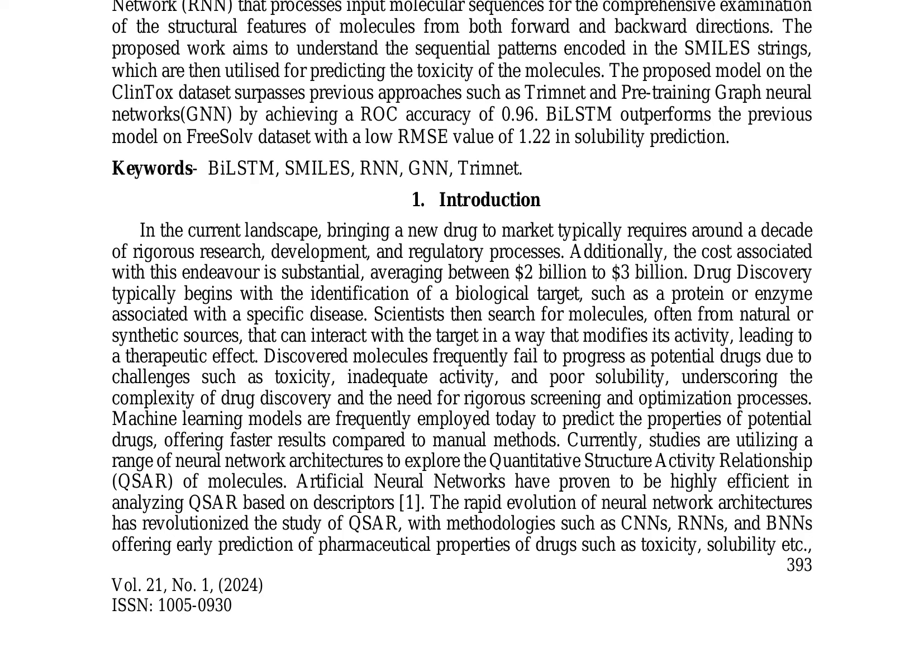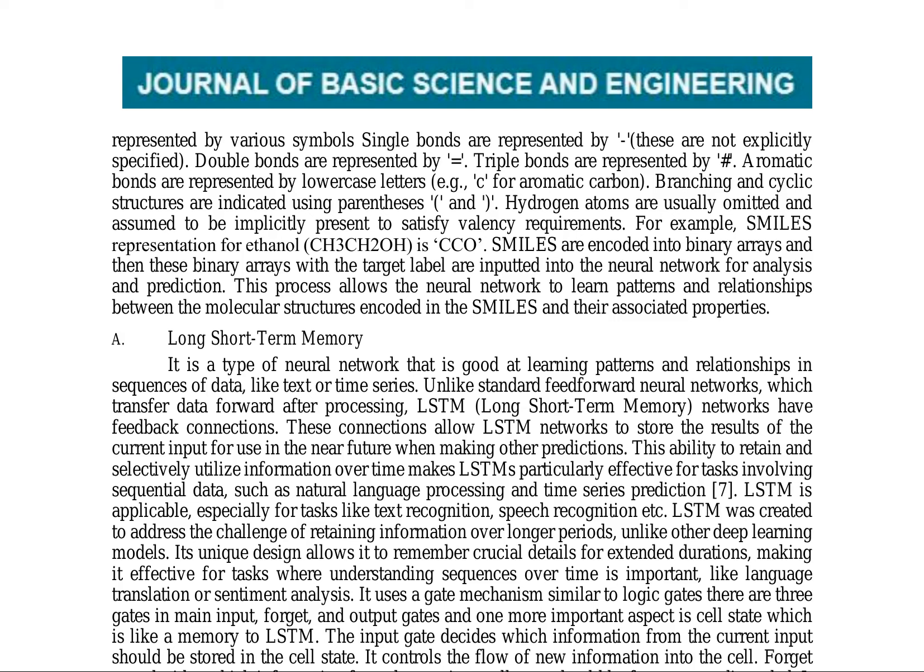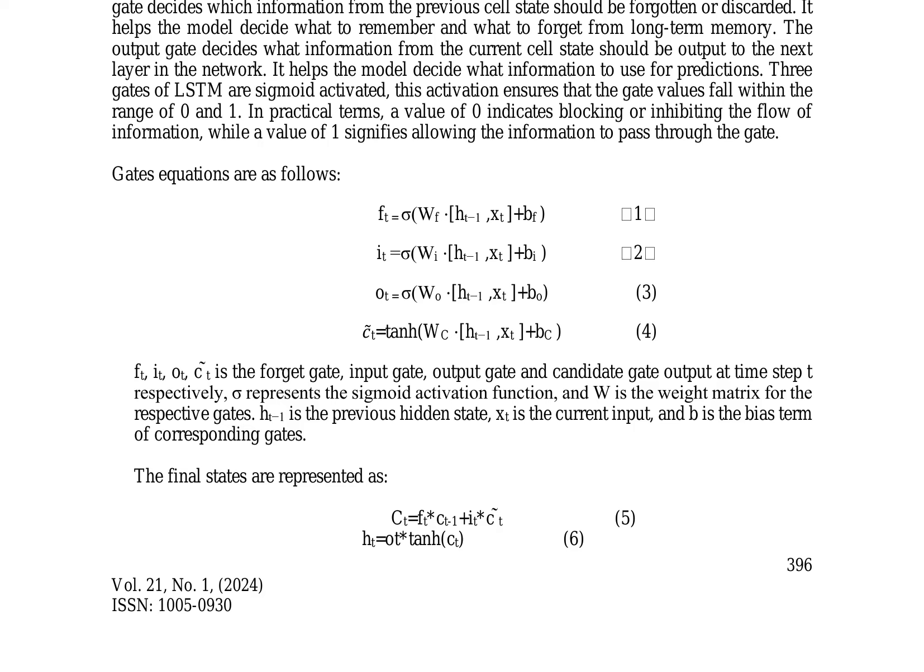The model's input is encoded into binary arrays and fed into the BiLSTM layer, which processes the data bi-directionally. The output is then passed through a dense network equipped with a sigmoid function to predict toxicity. The paper also delves into graph-based methods, highlighting the use of graph convolutional layers and fully connected neural networks for molecular property prediction.